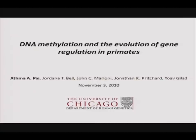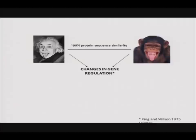Good afternoon. I'd like to start by thanking ASHG and the organizers of this plenary session for giving me an opportunity to present my research, which focuses on understanding mechanisms of gene regulation differences between humans and chimpanzees. The basis of much of the work in our lab is that phenotypic differences between humans and chimpanzees probably cannot be completely explained by changes in protein sequences. Instead, we're interested in looking at patterns of gene regulation that have either evolved or been conserved between the two species, with a particular focus on gene expression.